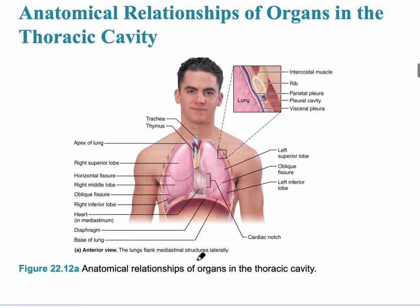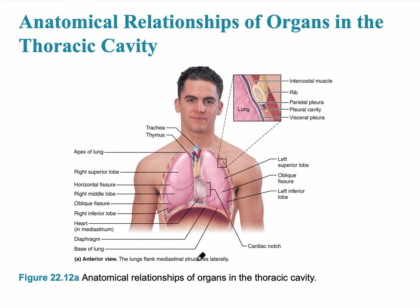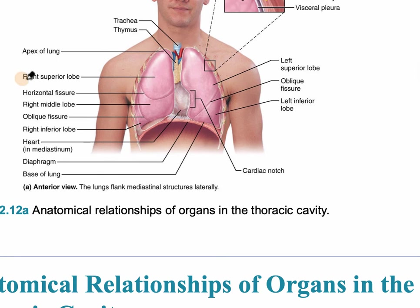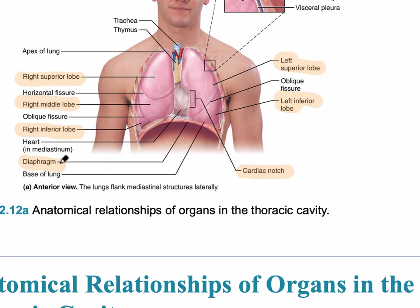This diagram shows the anatomical relationships of the organs in the thoracic cavity. On the right side of the lungs there are three lobes: the right superior lobe, the right middle lobe, and the right inferior lobe. On the left side, we see the left superior lobe and the left inferior lobe. The cardiac notch is where the heart fits into the lung area, and the lungs sit directly on the diaphragm at their base.